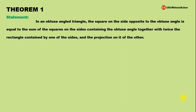Let's understand the statement. We have an obtuse angle triangle — a triangle with one angle greater than 90 degrees but less than 180 degrees. The square on the side opposite to the obtuse angle is considered.